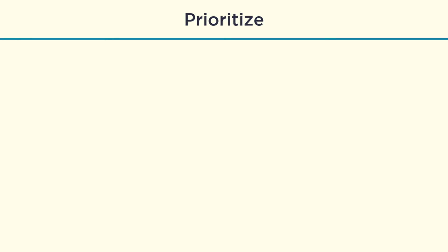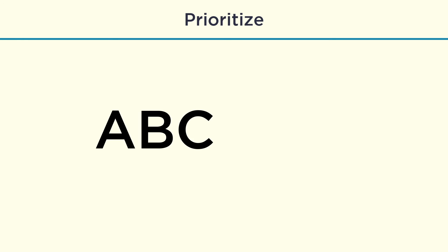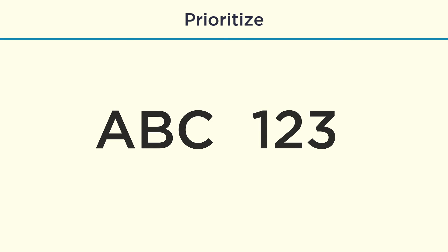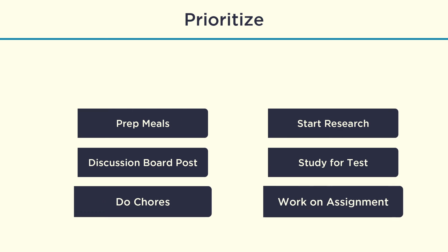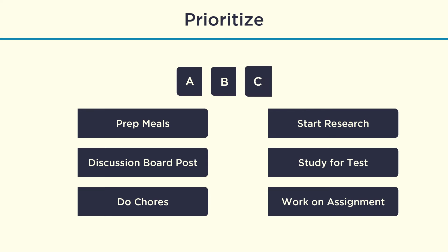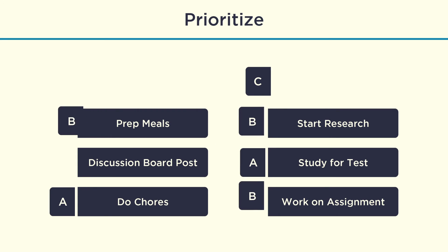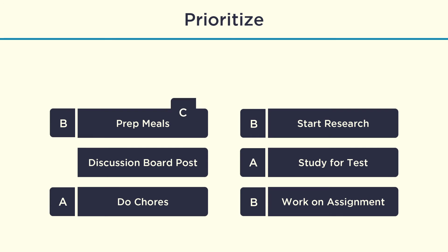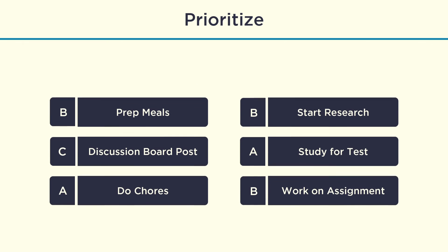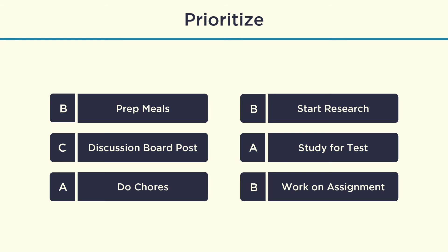One popular strategy to prioritize tasks is the ABC123 method. The first step of this method is to label each task with an A, B, or C. There may be more than one item in each category. A items are the ones that you must complete today. B items are the ones that you should complete today, and C items could wait until tomorrow if necessary. The second step is to prioritize items within each category by assigning a 1, 2, 3, and so on, based on importance and urgency.